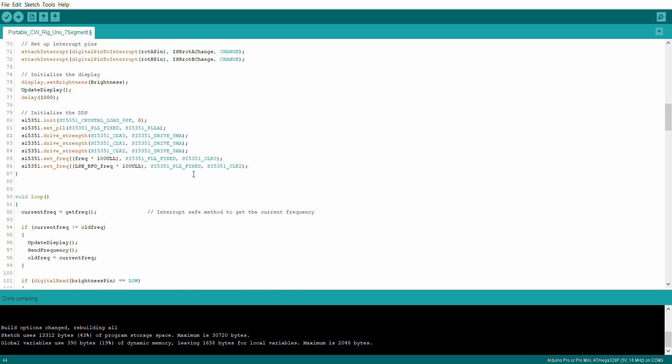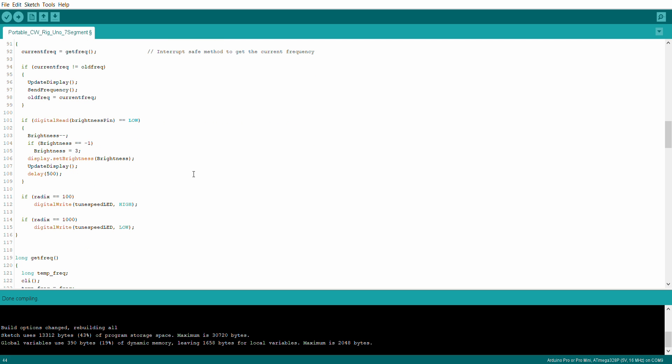Right. So, and then into the actual main loop itself. What can I say here? And we've got that digital pin that I'm using to set the four levels of brightness. So every time that gets pushed, it just decrements the brightness by one. And then rolls back over once it gets down to minus one. So zero, one, two, and three are the valid numbers that can be set to.